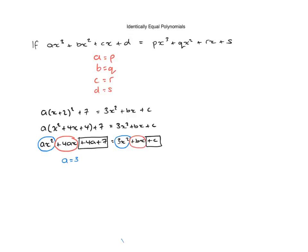For the red ones, what we have is 4a is equal to b. And all we're doing is we're just taking the coefficient in front. So the 4a here must be equal to the b on the right hand side. And the last one is 4a + 7 is equal to c.